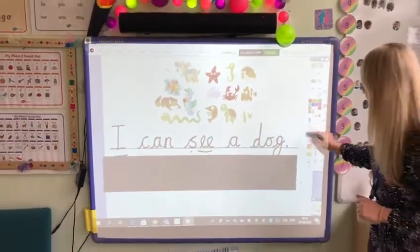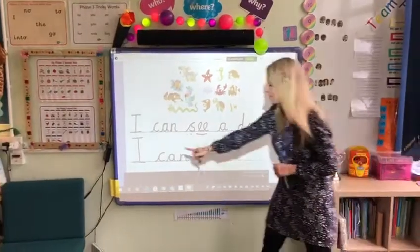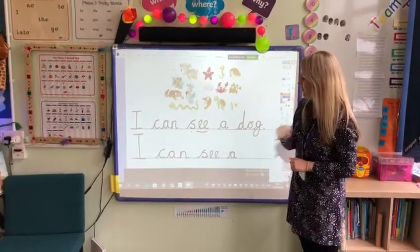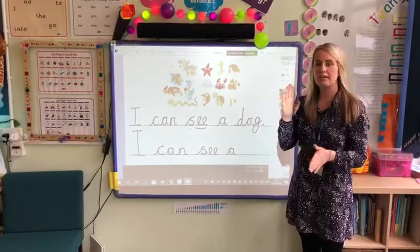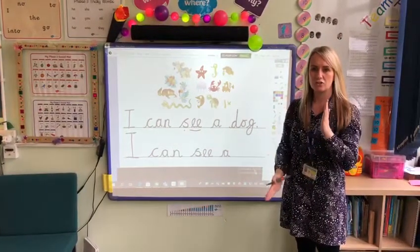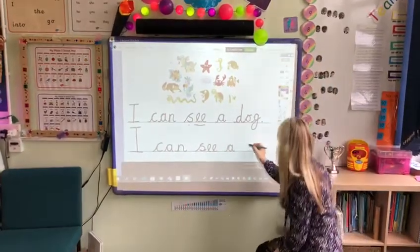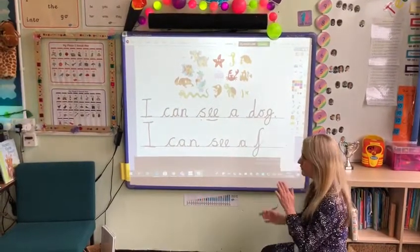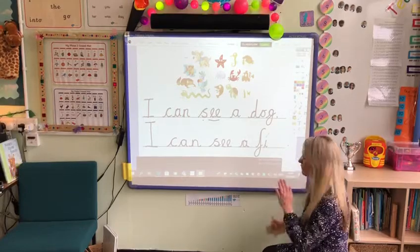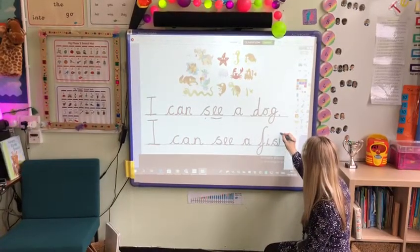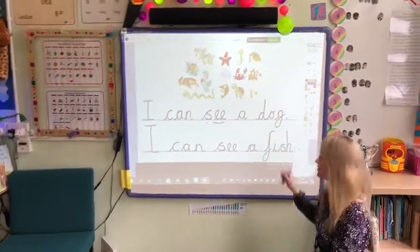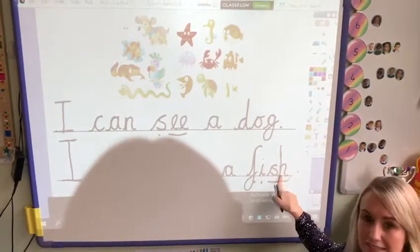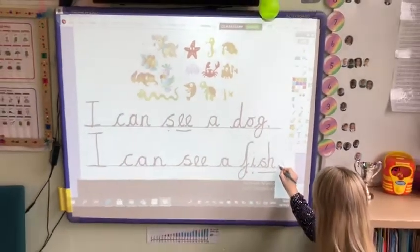Okay, let's have a go at another one. I've already written the beginning of this sentence. I'm going to choose a fish this time. There's the fish. I can see a fish. F-I-SH. Let's have a go at writing it. In fish, we've got another sound with two letters. F-I-SH — two letters making one sound. And don't forget our full stop at the end.